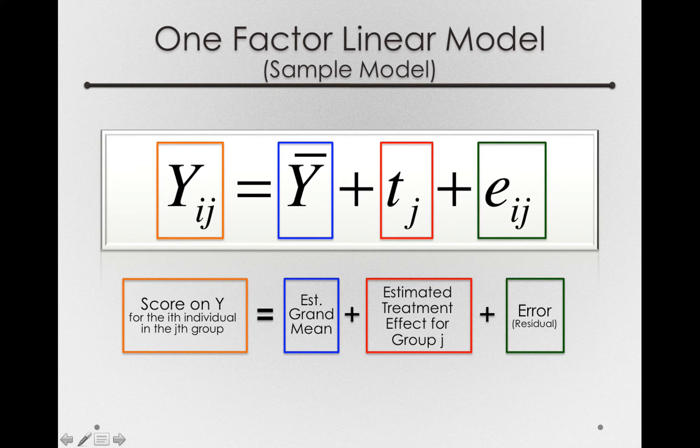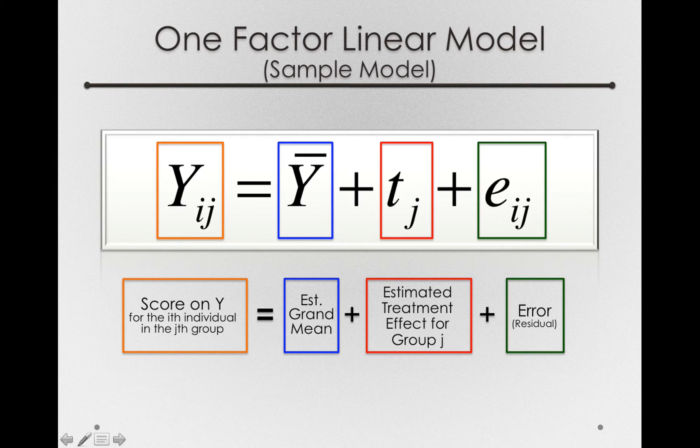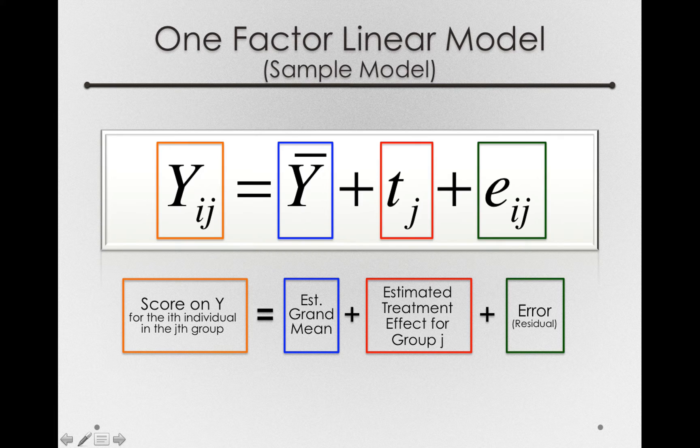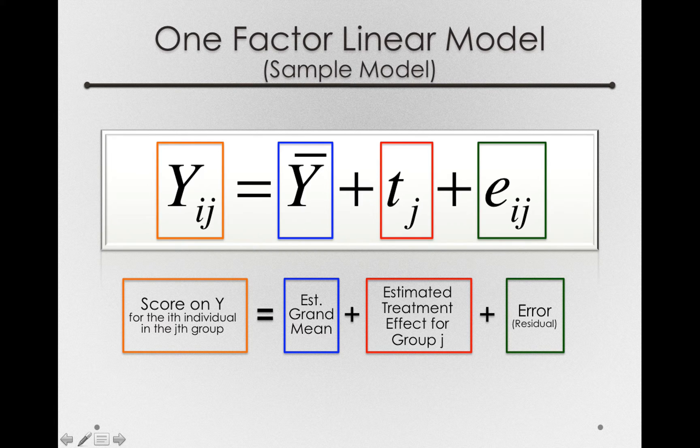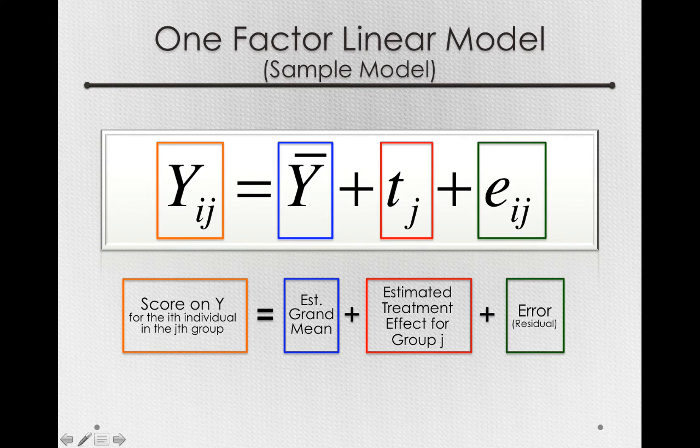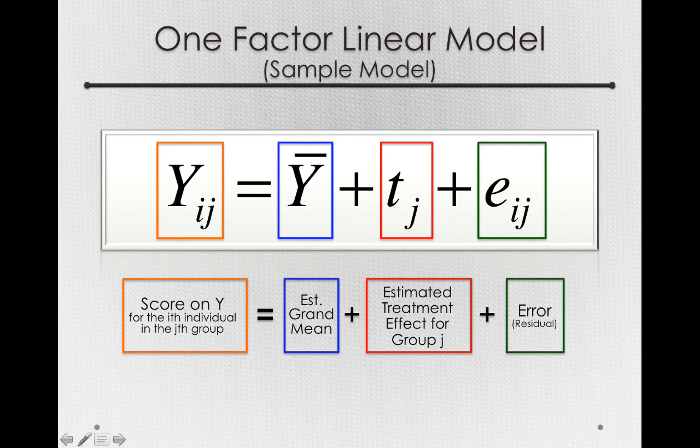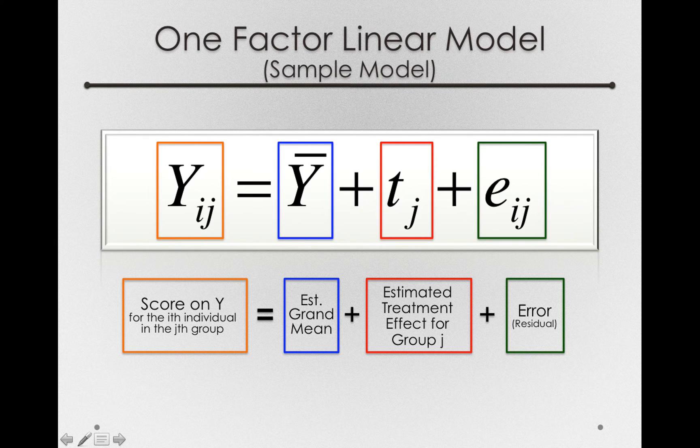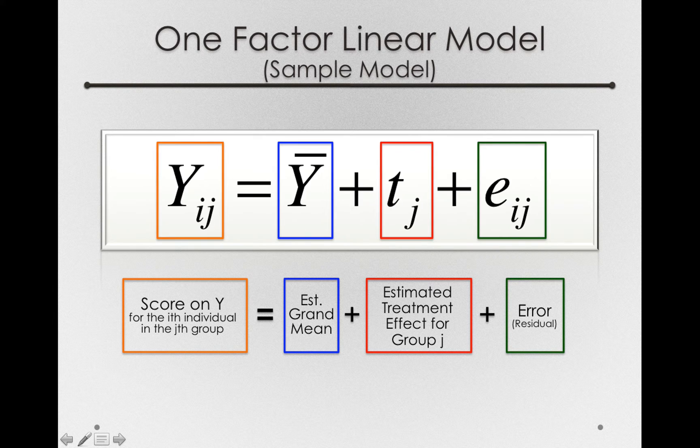Which is the error in our model. We'll still call this error, but more formally, in a sample model, we'll call this the residual. And we call it the residual because, in principle, we're not measuring the true error in the population. Instead, we're measuring the residual or what's left over in our model after we've subtracted away the grand mean from each person and the estimated treatment effect for each person. The residual is simply what's left over, the difference between an individual's score and the mean of the group that they're a member of.